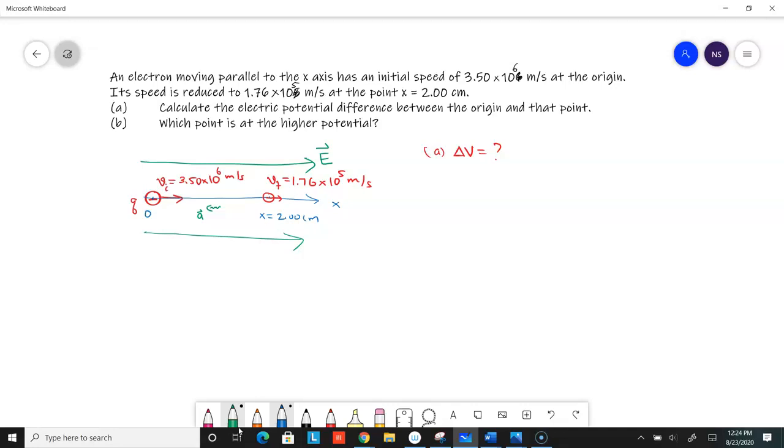which is always my preferred way, is to use energy whenever possible. So if I use conservation of energy here, delta K plus delta U is equal to zero. Delta K is final minus the initial, so it's one-half M V final squared minus one-half M V initial squared, and it's an electron, so this is mass of an electron. And that's equal to negative delta U.